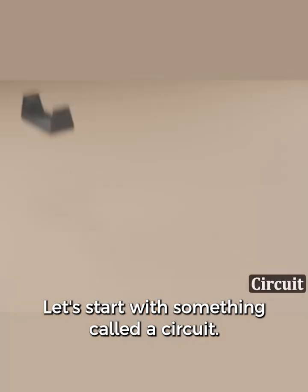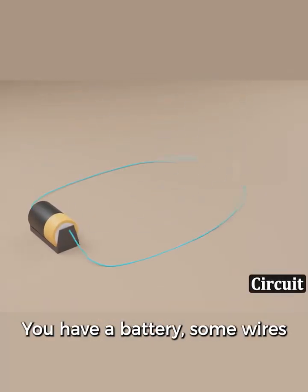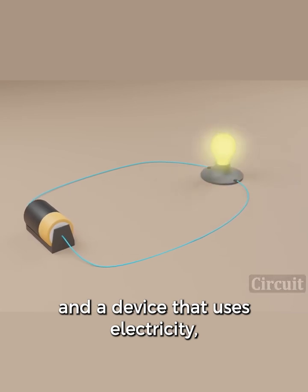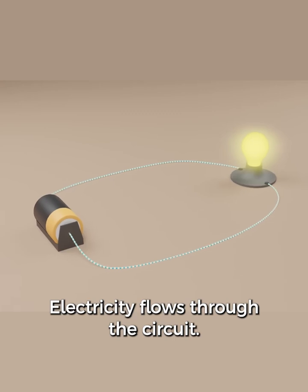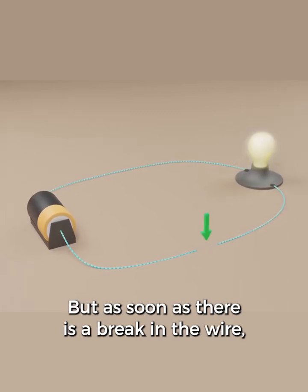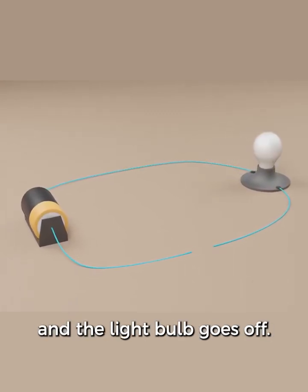Let's start with something called a circuit. You have a battery, some wires, and a device that uses electricity such as a light bulb. Electricity flows through the circuit, but as soon as there is a break in the wire, the electricity stops flowing and the light bulb goes off.